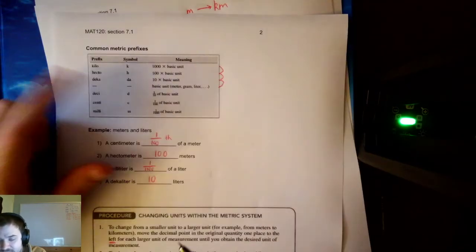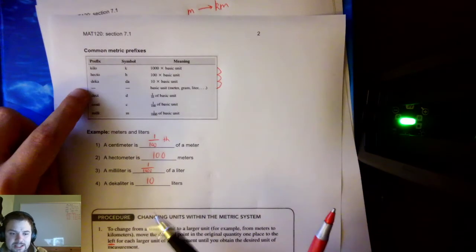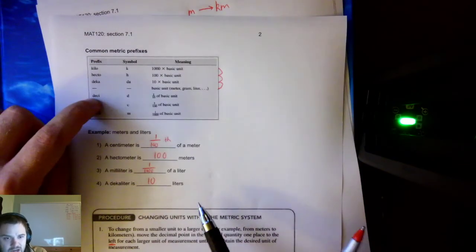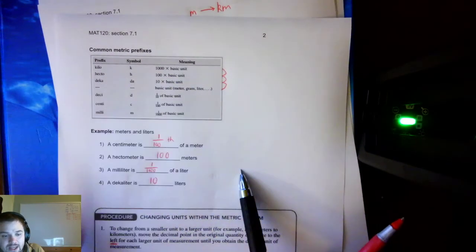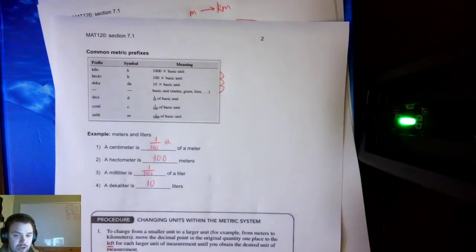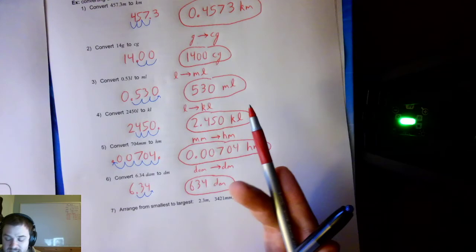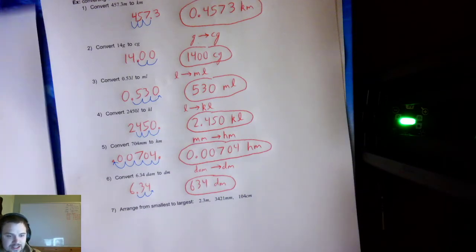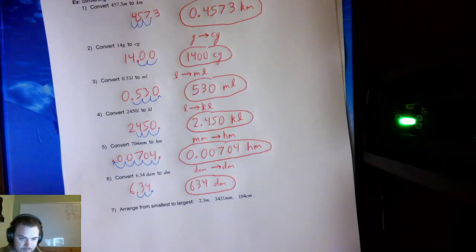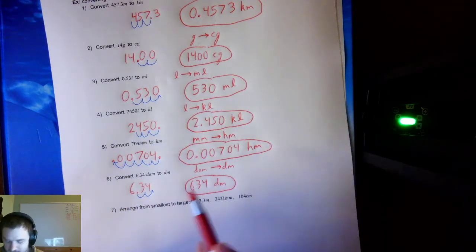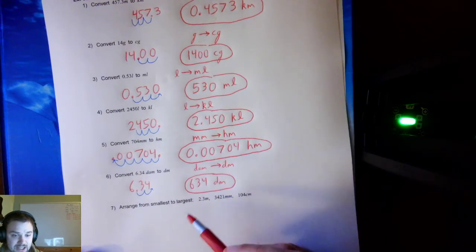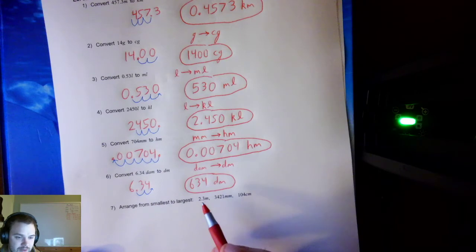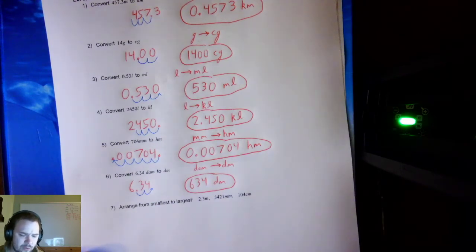It's super important to have this prefix table in your mind whenever you're thinking about metric units — commit it to memory, make flashcards. Remember which ones are bigger and which are smaller, because that tells you how to shift the decimal. That's all you have to do to convert between metric units: shift the decimal. You don't need to multiply or divide — just hop left or right because everything is base 10.